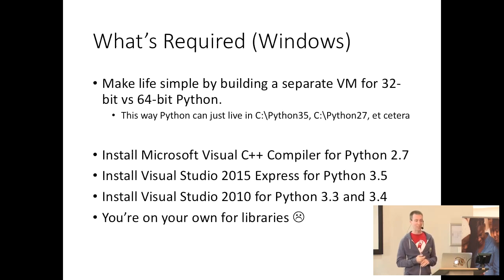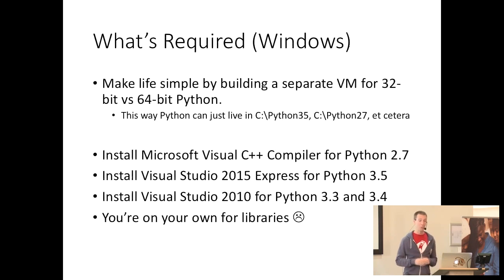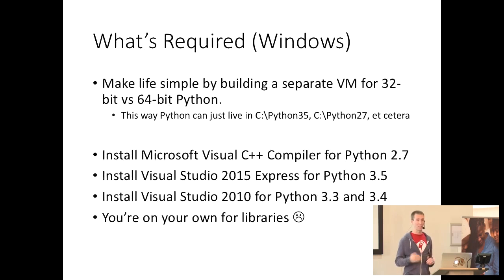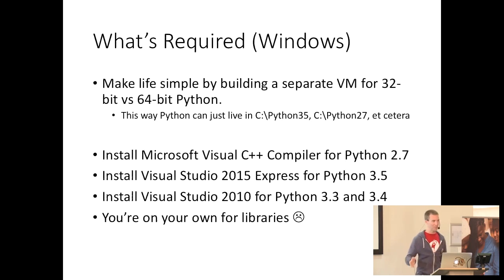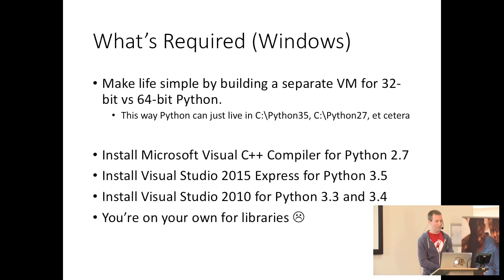On Windows, make life simple by building separate VMs for 32-bit versus 64-bit Python. Tools like Tox have expectations of where they'll find Python — they look for it at C:\Python35 or C:\Python27 — and it will make your life much easier to just let them have their way. If you attempt to fight those tools, you'll be fighting them in your automation forever. You'll need all the different compilers we discussed, along with Visual Studio 2010 Express plus the Windows SDK for the 64-bit compilers. And you're on your own for libraries — it's the wild west.